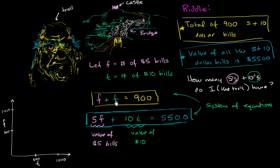Let's think about all of the combinations of f's and t's that satisfy this first equation. If we have no tens, then we're going to have 900 fives. So if we have no tens, we're going to have 900 fives. So that looks like it's right about there. So that's the point: 0 tens, 900 fives. But what if it went the other way? If we have no fives, we're going to have 900 tens. So that's going to be the point 900 tens, 0 fives.